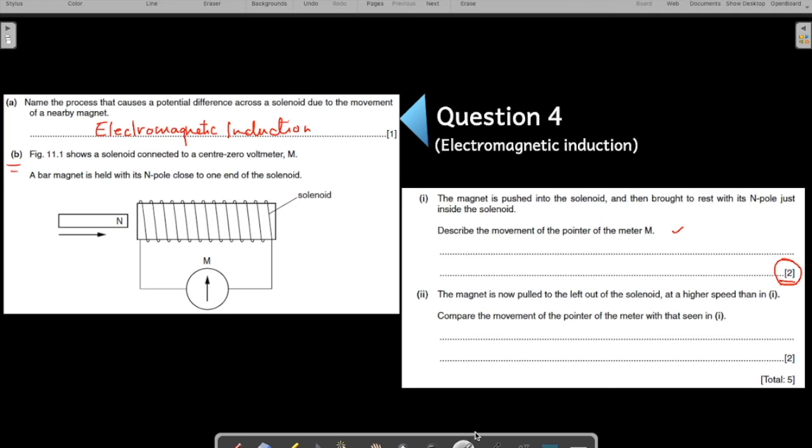You can say that the meter will deflect, but will it keep deflecting all the time? No. Why? Because the magnet is brought to rest ultimately inside the solenoid. So what do you say? The meter will deflect and then come to the zero position again. It will show a movement. It will deflect and then move back. Move back to zero again. It will deflect and move back to zero again. So you are mentioning two points in your answer.